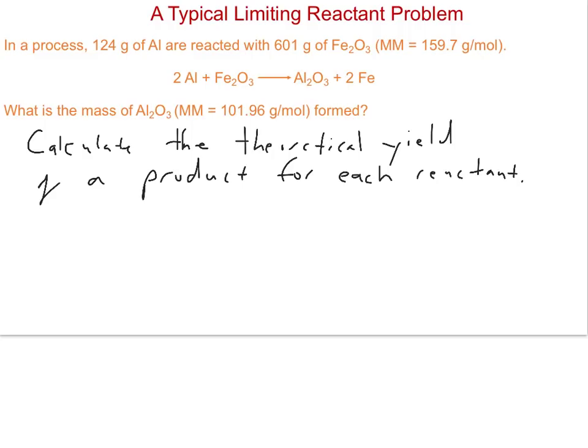We'll start with aluminum. Proceed using stoichiometry. We have 124 grams of aluminum. Remember, stoichiometry problems generally involve the workflow of grams to moles, moles to moles, moles to grams. We need to convert grams of aluminum into moles of aluminum so we can use our balanced chemical equation.